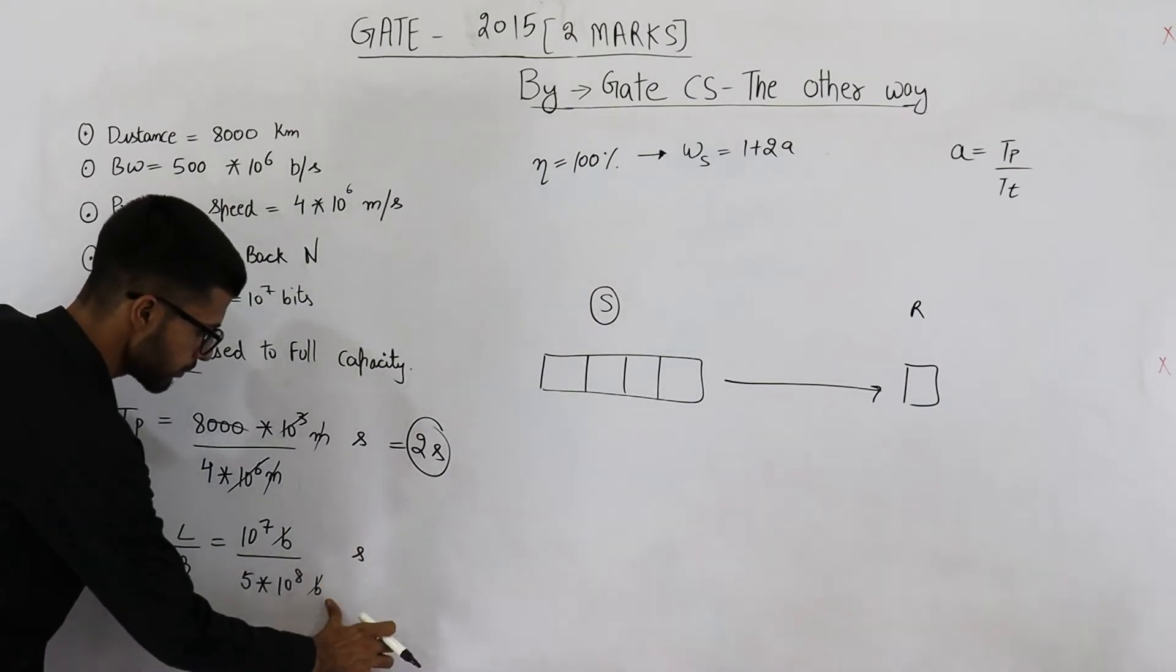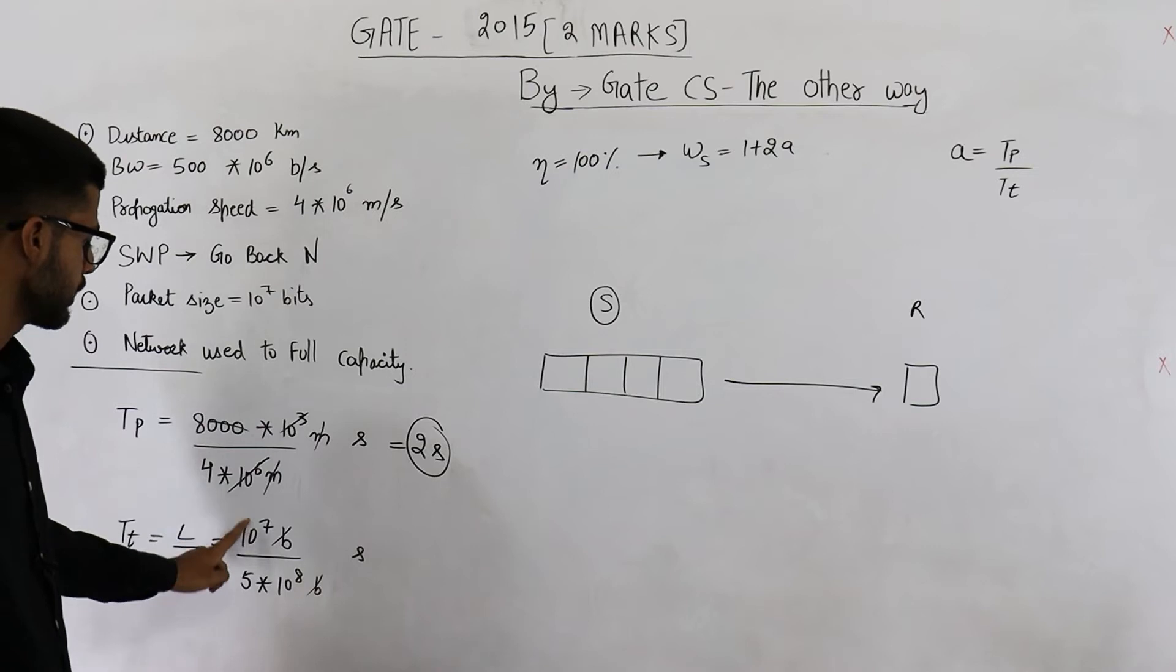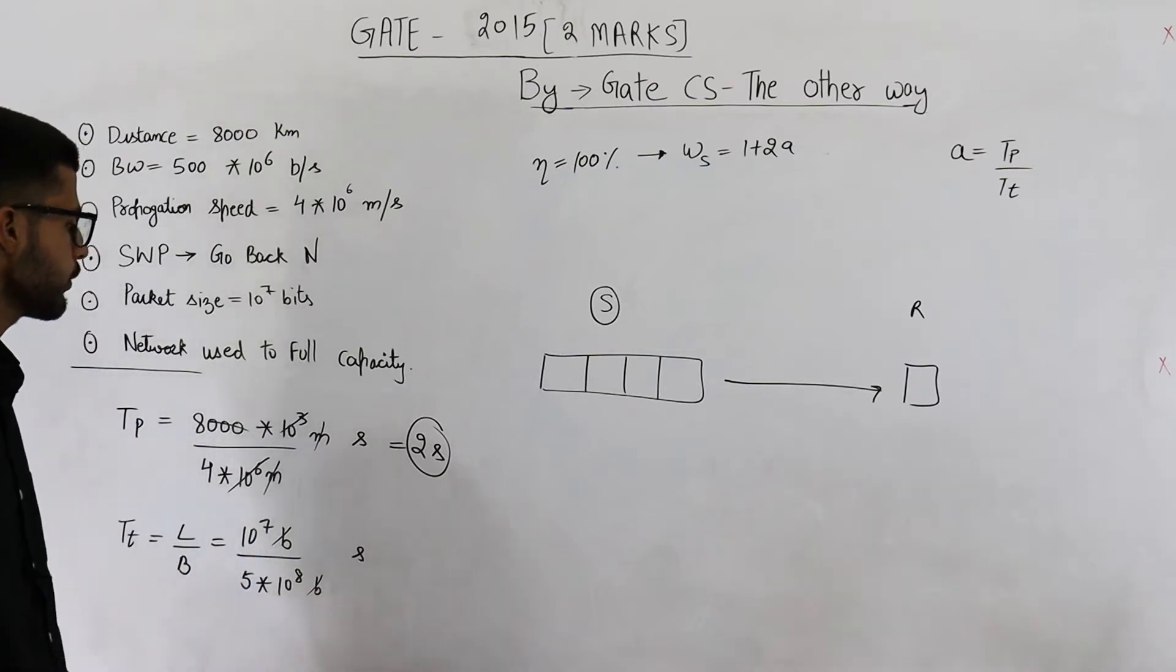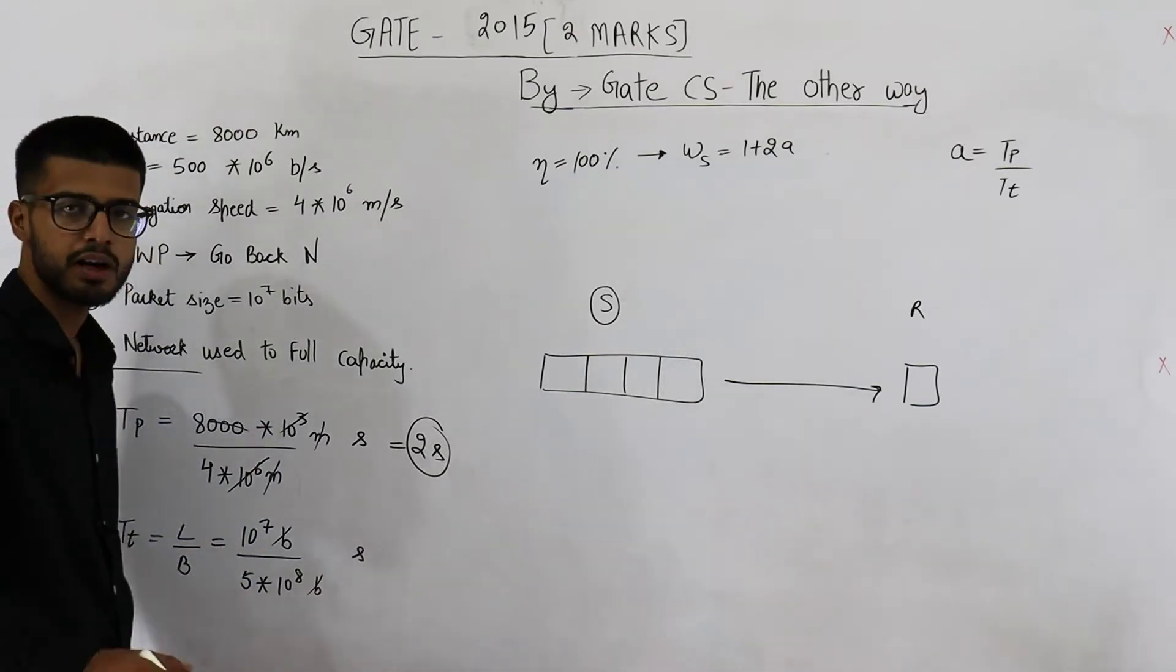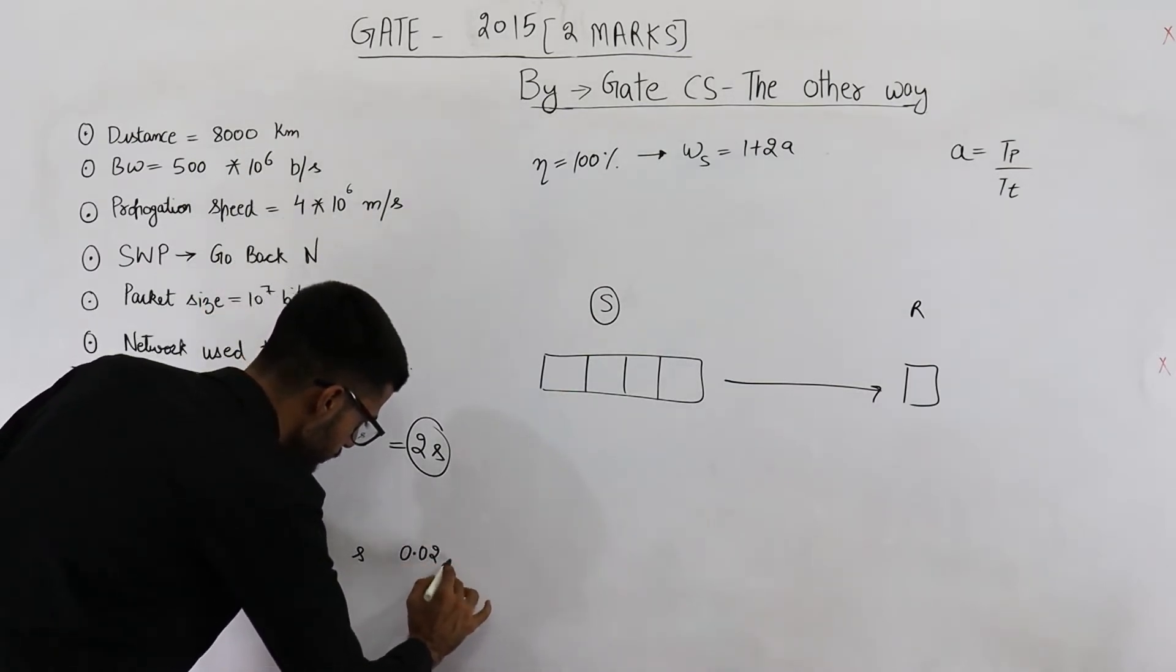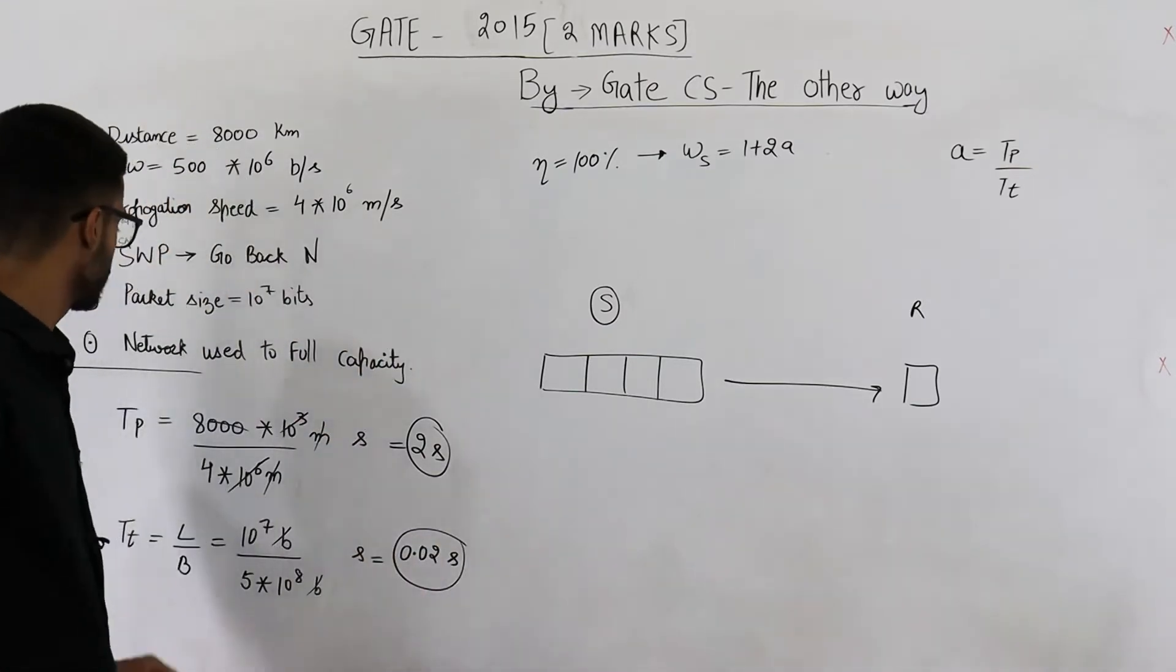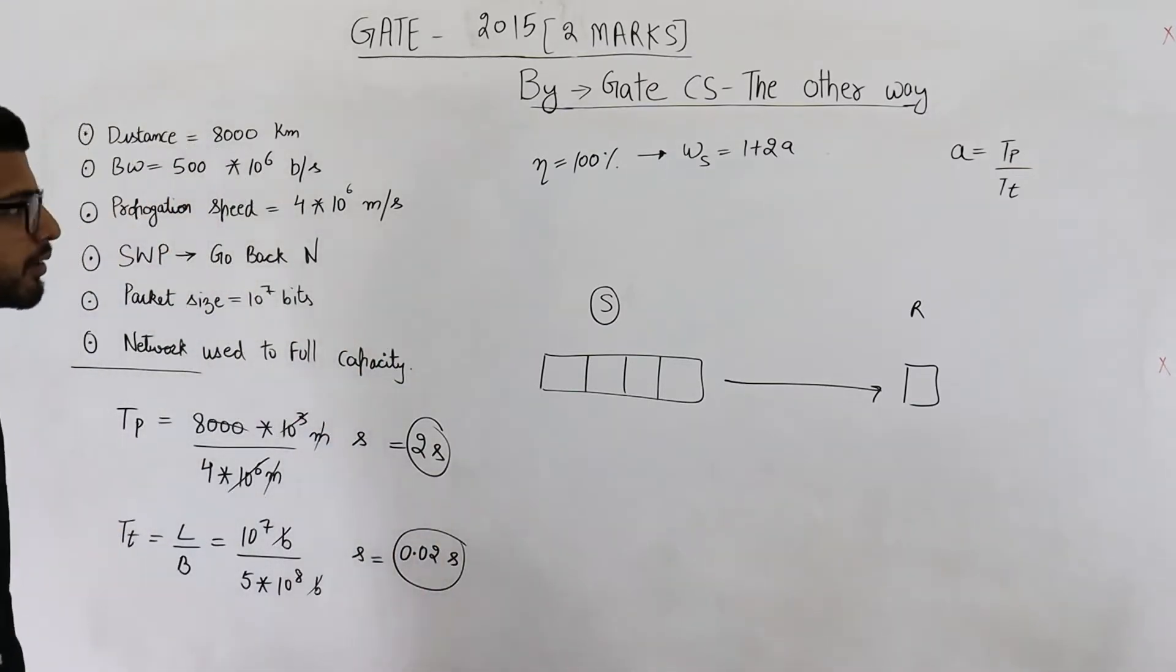This per second can be removed from here. This will be 1 upon 50. 1 upon 50 is 1 by 5 into 1 by 10, that is 0.02 seconds.